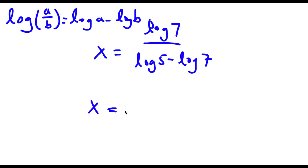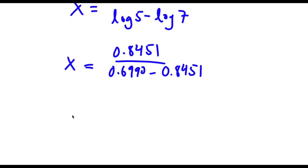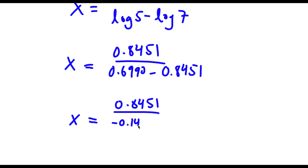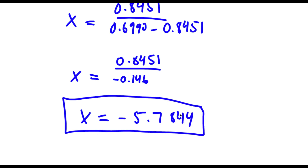So now log 7 is equal to 0.8451, over log 5 minus log 7, which is 0.6990 minus 0.8451. This gives us 0.8451 over negative 0.1461, and if you divide these two you get negative 5.7844. So this is our answer.